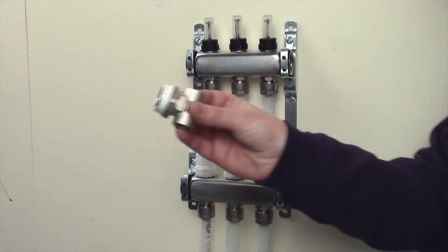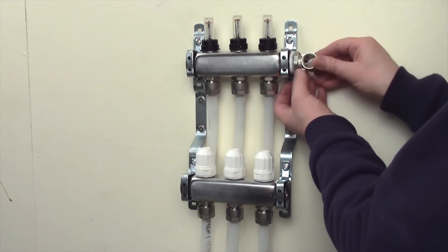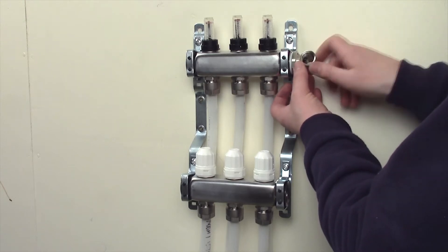Firstly, fit the auto air vent and drain cock that came with the manifold to the top right end of the flow bar using PTFE tape.